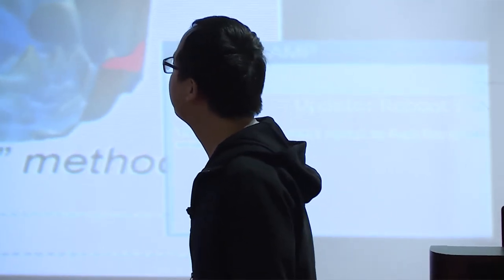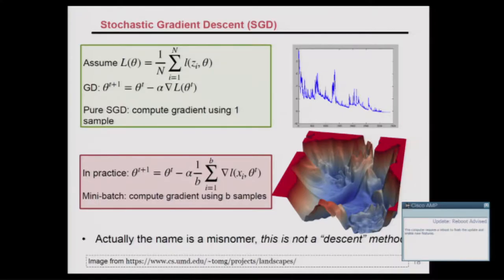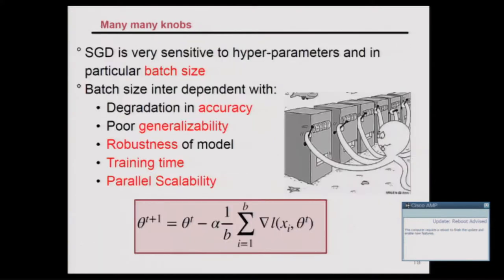For deep learning specifically, there are many sharp local minima — the loss goes down, up, down, up — a very rugged landscape. SGD is very sensitive to hyperparameters: learning rate, regularization, and batch size all matter a lot. Large batch size training doesn't work — it affects accuracy and model robustness, making the model easier to attack.